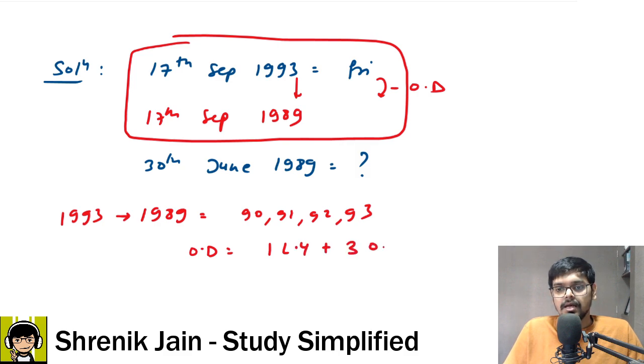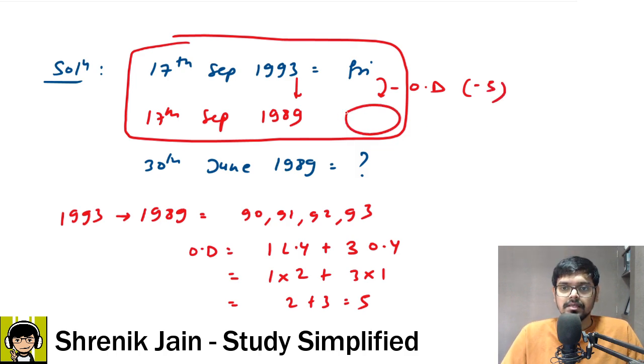Therefore, the number of odd days equals one leap year and three ordinary years. For a leap year we have two odd days, and for an ordinary year we have one odd day, so 2 plus 3 equals 5. So five odd days. If odd days is 5, then minus 5 - what day is coming?